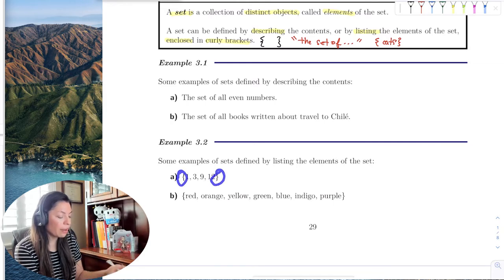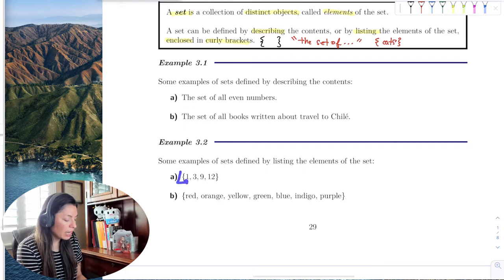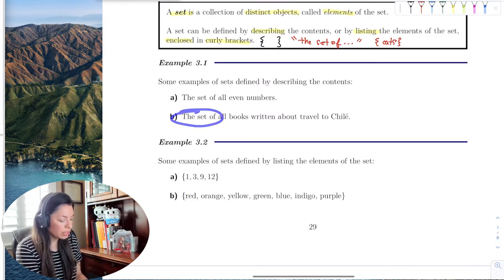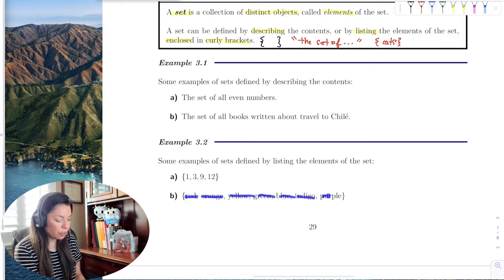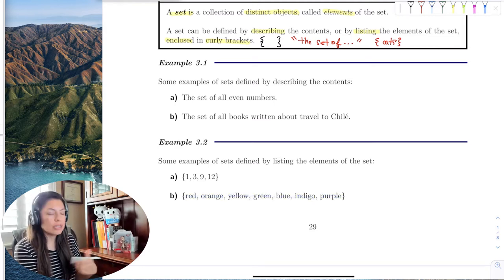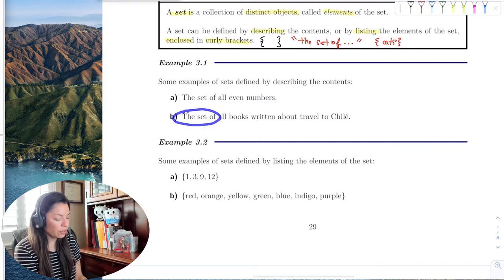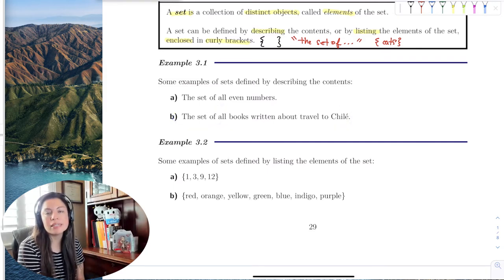We see the curly brackets, so that replaces the words 'the set of'. So we would say the set of numbers 1, 3, 9, 12. I do see curly brackets, so I replace it with the words 'the set of' orange, yellow, green, blue, indigo, purple. So the curly brackets replace these first three words, and then you write the elements of the set.